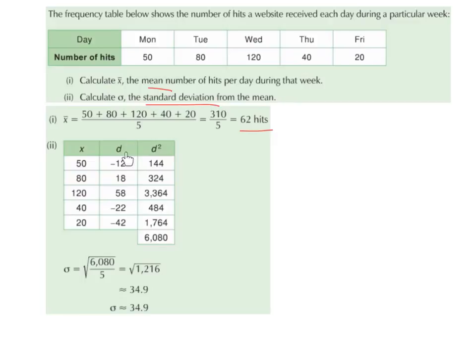Then we square each of the differences or each of the deviations. Minus 12 squared is 144. 18 squared is 324. 58 squared is 3364. Minus 22 squared is 484. Minus 42 squared is 1764.